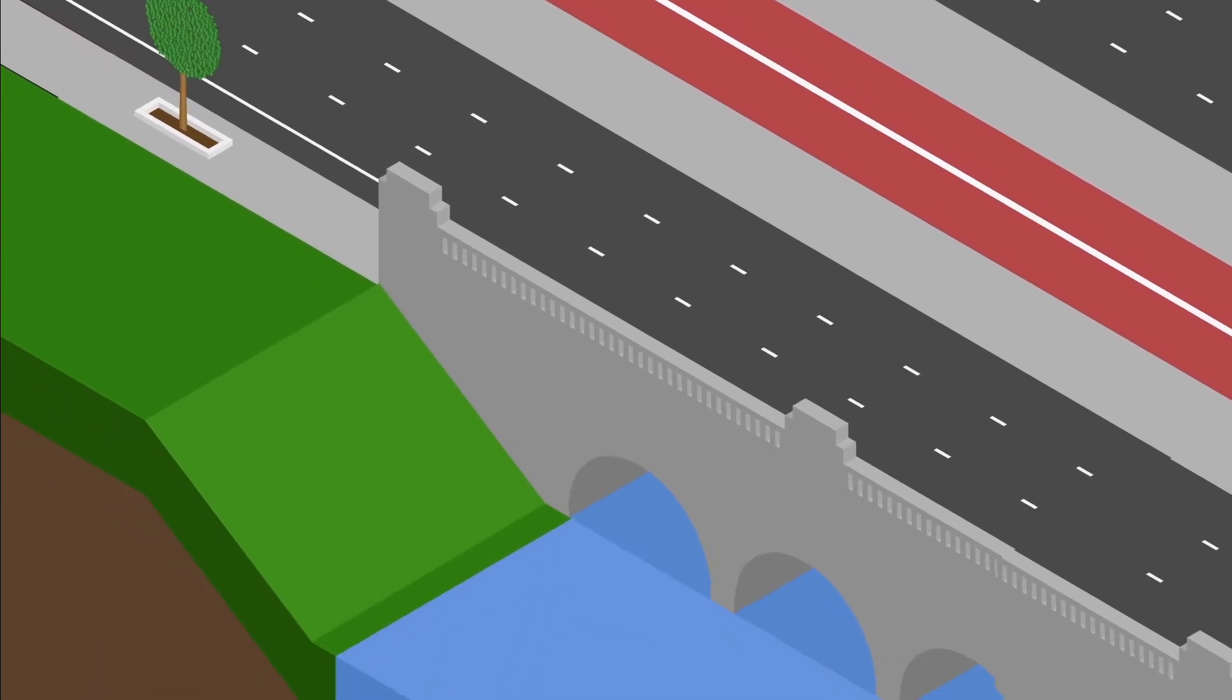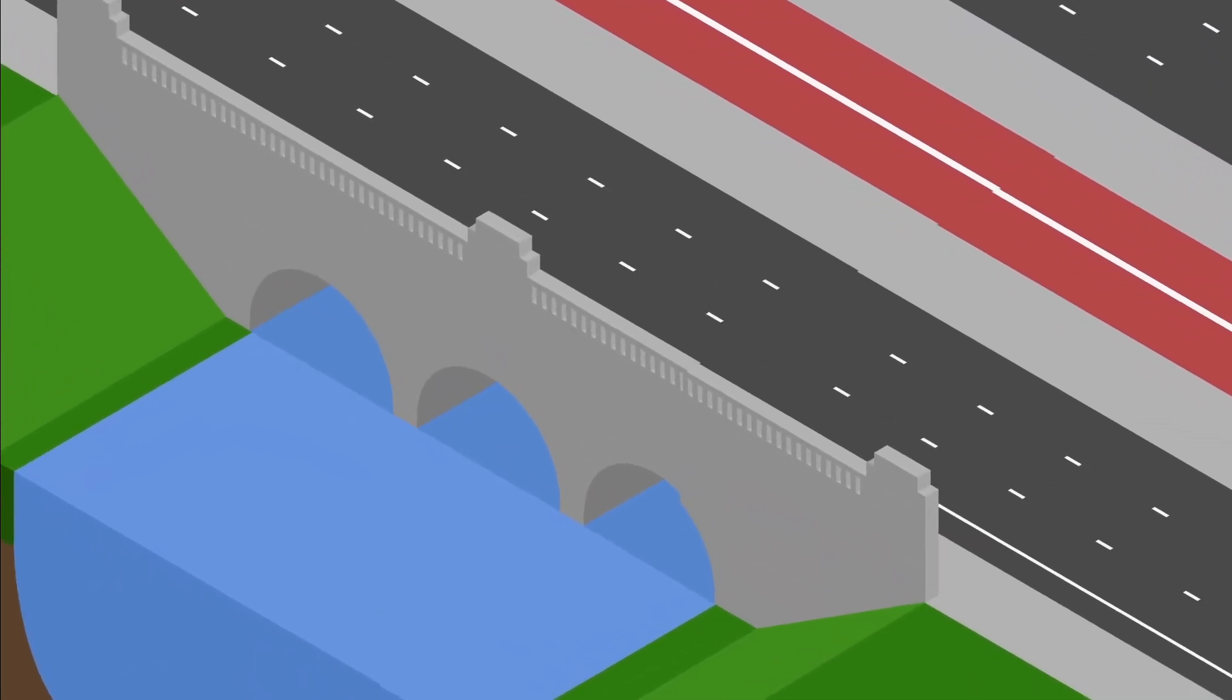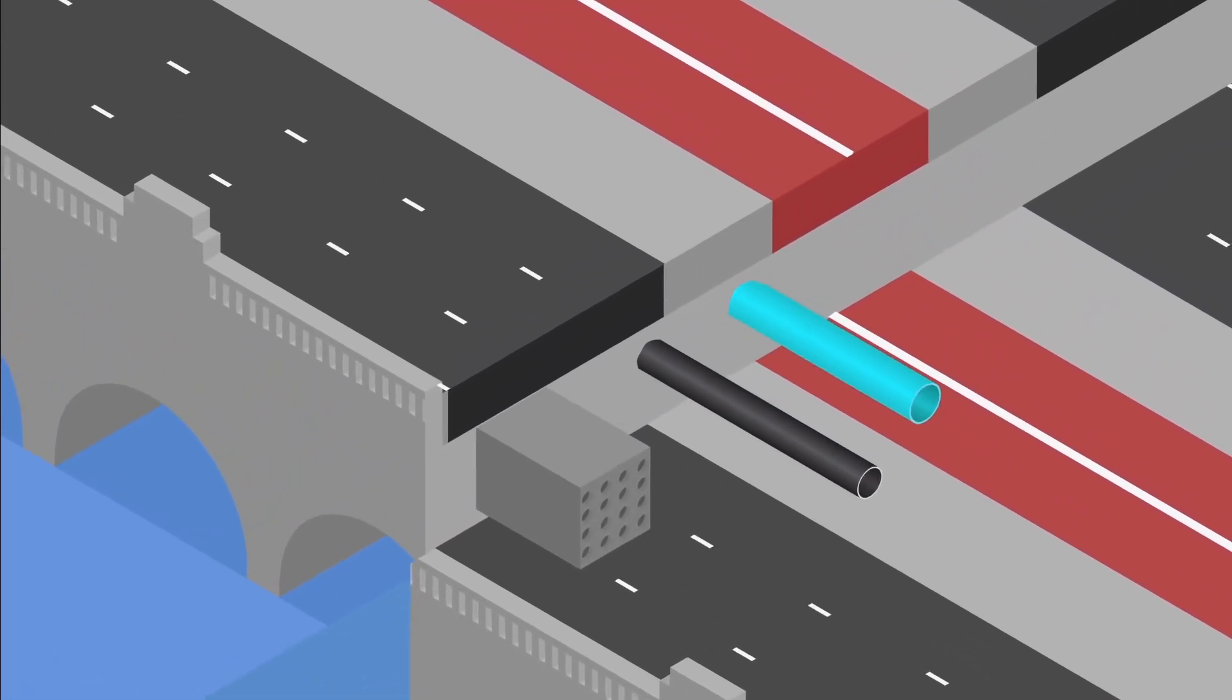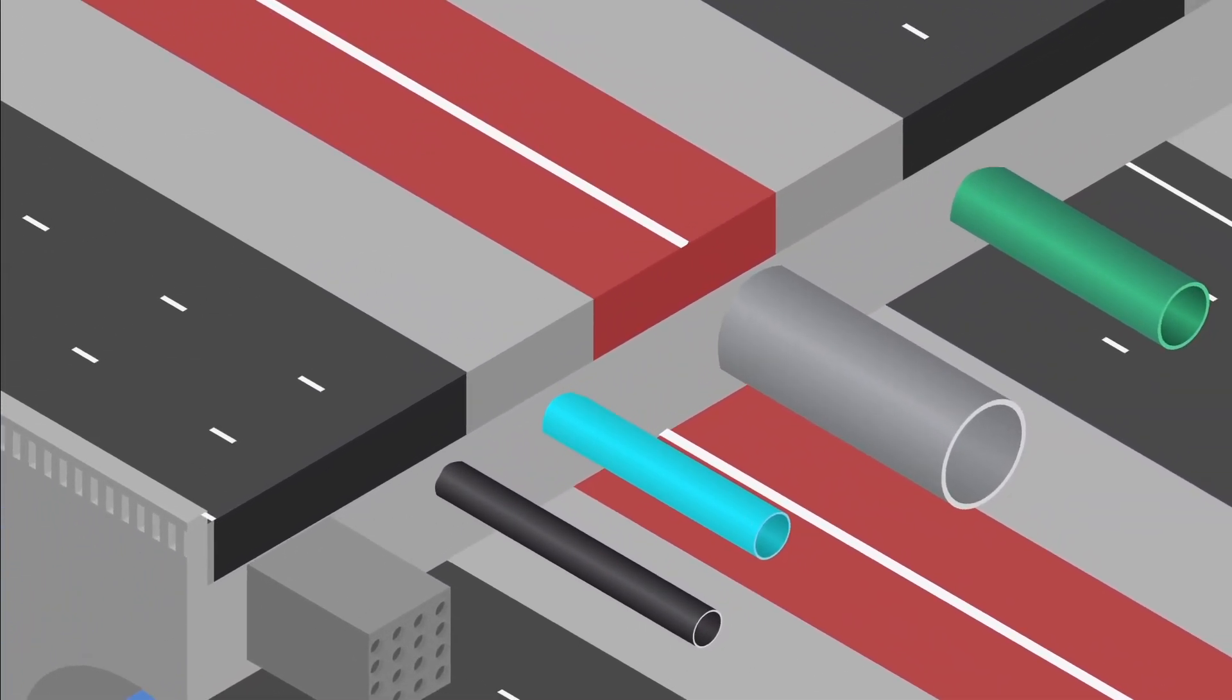So what happens when there's a bridge or culvert in the way of underground utilities, you may ask? The utilities are incorporated into the design of the structures, sometimes placed along the side, underneath or within them.